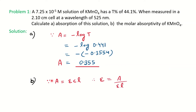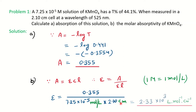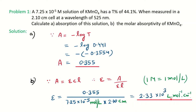So we calculated the absorbance. They are also asking you to calculate the molar absorptivity. Put the formula A = εCL, rearrange for epsilon, and put the values: absorbance is 0.355, concentration is 1 mole per liter, and L is the given thickness. You get the value of molar absorptivity in liter per mole per centimeter. This is how we solve the first problem based on Beer-Lambert's law.